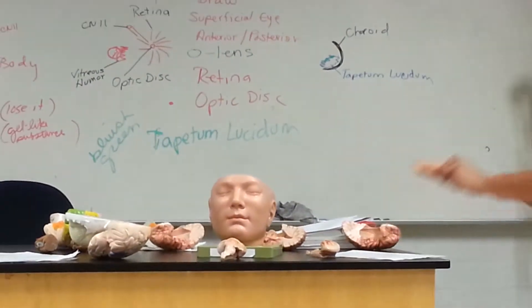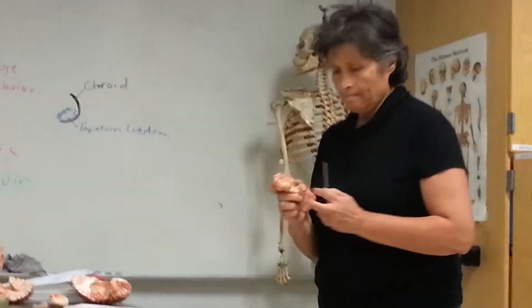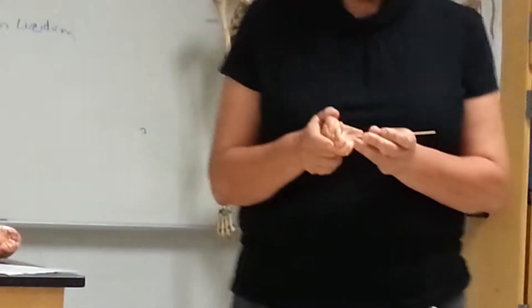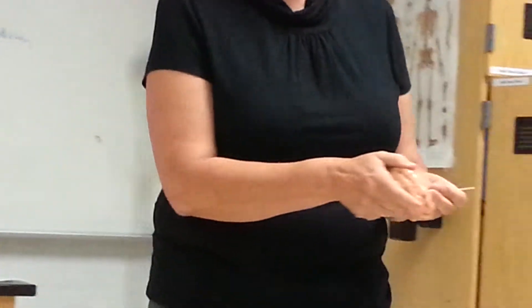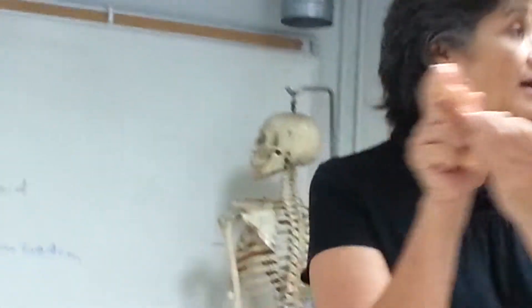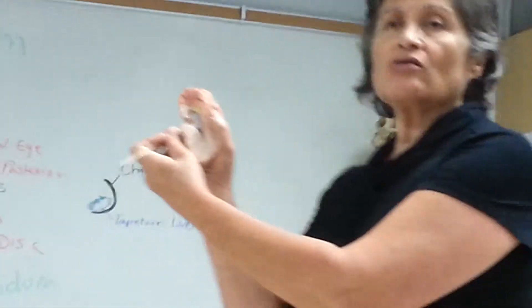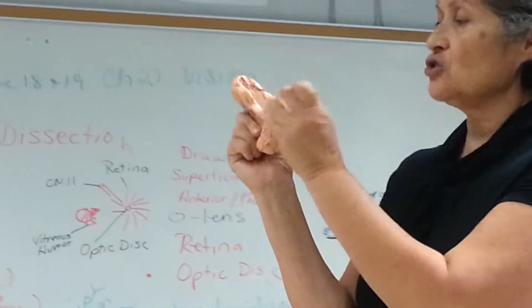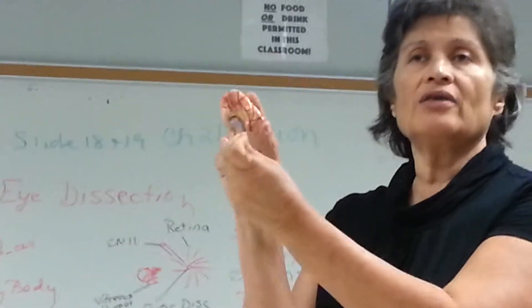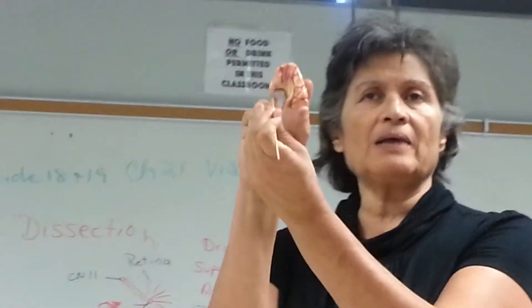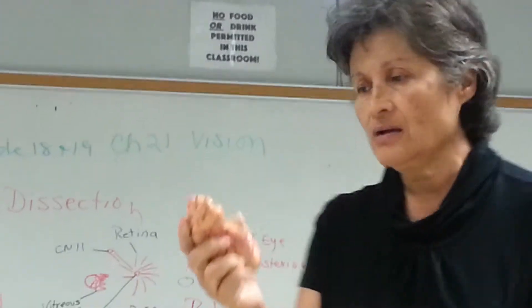What are these blood vessels here? It's a choroid plexus — that's a lateral ventricle and it's showing you the choroid plexus here.